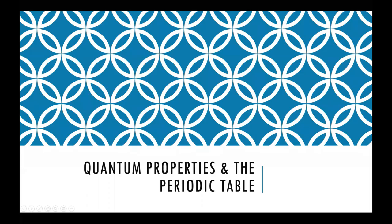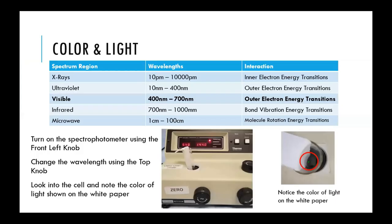In the lab experiment itself, this quantum properties lab is a number of smaller mini-experiments combined under the same theme of quantum properties of elements and the periodic table. The first of these mini-experiments is relating color and light. You're going to be using the spectrophotometers in the lab and changing the wavelength of light, dialing the wavelength using the knob on top, and looking inside to see what color that light is.